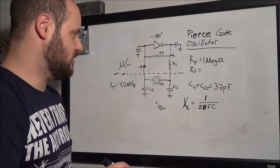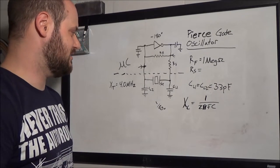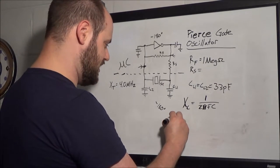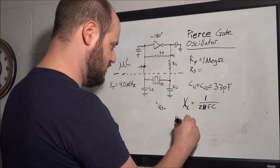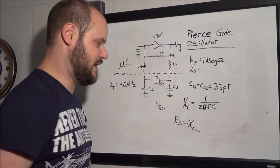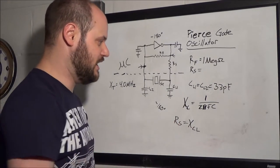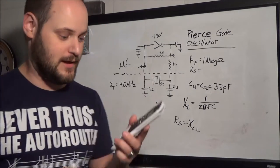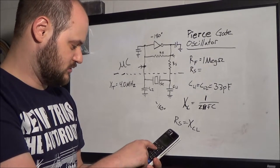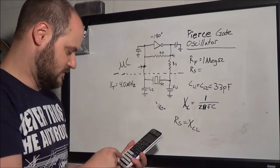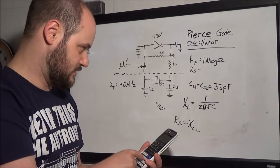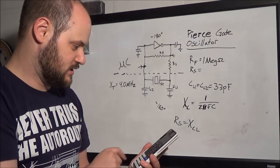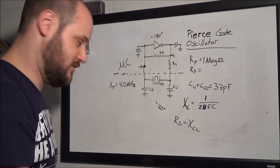Anyhow, I want to go ahead and calculate what the actual reactance of these capacitors are because that's going to help us determine what RS is. And a good rule of thumb is that RS equals the XCL, the capacitive reactance of the load capacitor. So, if we have, oh, and I should have this ready. Let me get my calculator. Should have been ready. I never am. Got it? Okay. So, we're going to do 1 over 2 times pi times our frequency, 4 MHz, 4 times 10 to the 6th, times our capacitance which is 33 pF, which is 33 times 10 to the minus 12. Comes out to be 1200, and I'm going to round to 1206 ohms.